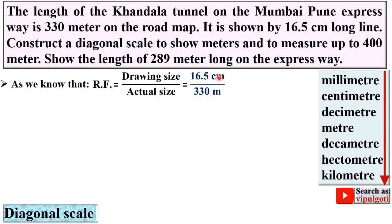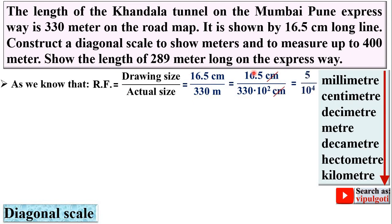Both values are in different units, so you have to convert first. You know that 1 meter equals 10² centimeters. After converting and simplifying, you will get RF = 5 upon 10⁴. So this is your representative fraction.